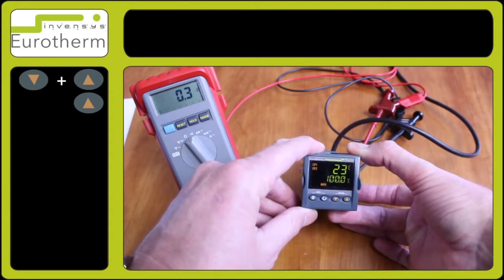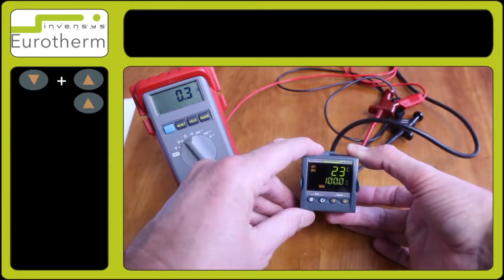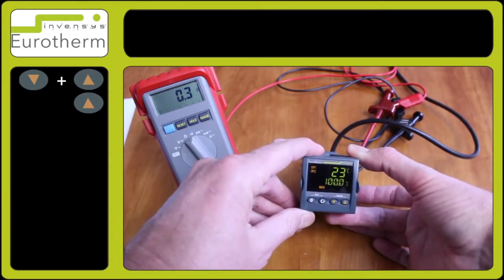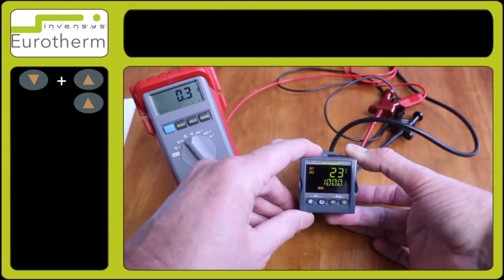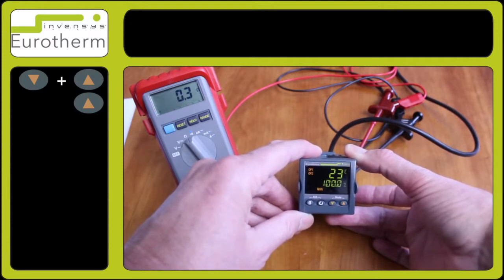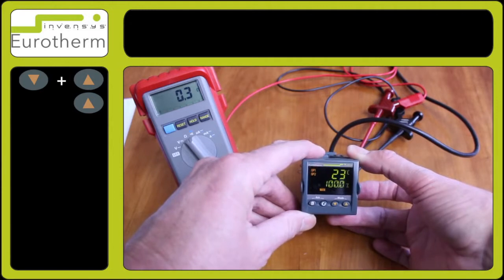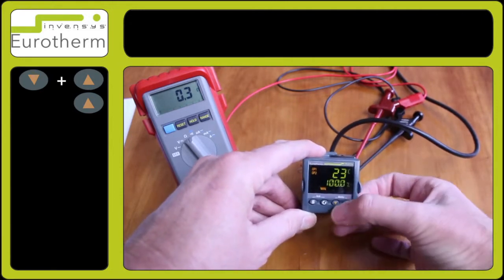This switches now to a different display on the front. At the bottom we now have a percentage mark and it says 100%. This will show a short circuit on the relay output whilst this has been selected.